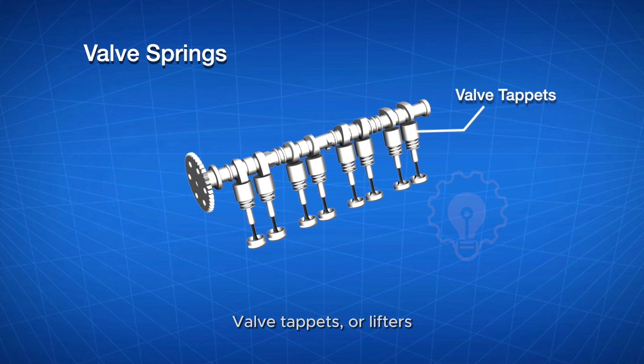Valve tappets, or lifters, transmit the motion from the camshaft to the valves. They ensure that the valves open and close at the right time, maintaining the engine's balance and performance.